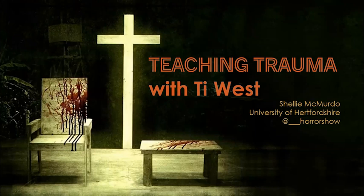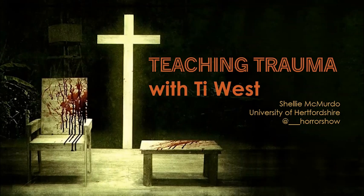I teach an optional research-led specialist module offered to film production students in their second year called Trauma on Screen. The intention of my module is to give students an introduction to how film and television texts can function as spaces to address, work through, and discuss cultural trauma and societal anxieties. The case study screenings used on the module include films addressing a variety of topics like grief, national trauma, historical trauma, moral panics, true crime and wound culture — definitely not all horror, but a fair amount of it, because horror is a really useful genre to teach trauma studies with.